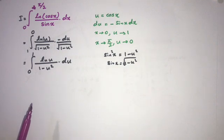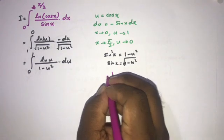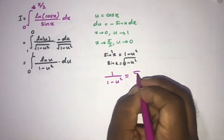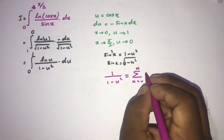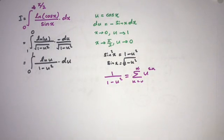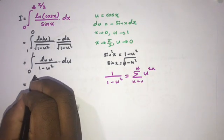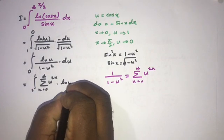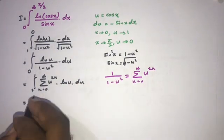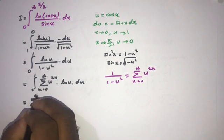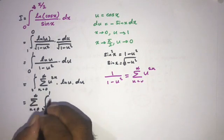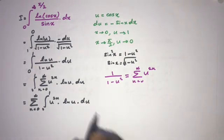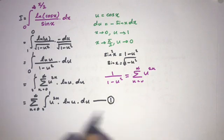Now, how to evaluate this integral? We use the infinite series: 1/(1 - u²) = sum from n=0 to infinity of u^(2n). We can write the integral as the integral from 0 to 1 of the sum from n=0 to infinity of u^(2n) times ln(u) du. Moving the summation outside the integral gives equation (1): sum from n=0 to infinity of the integral from 0 to 1 of u^(2n) ln(u) du.